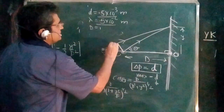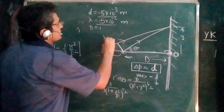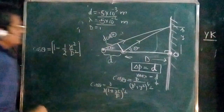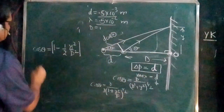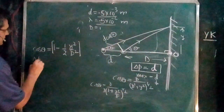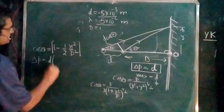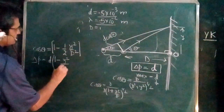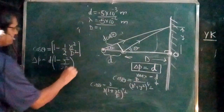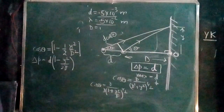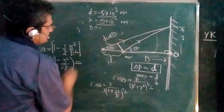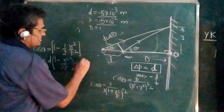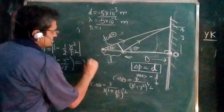The path difference is δP = D·cos θ. As θ increases, the path difference decreases. Substituting our expression: δP = D × [1 − y²/(2D²)]. For a bright fringe, this path difference must equal nλ.